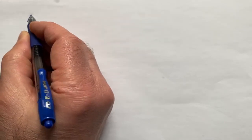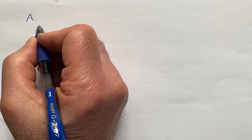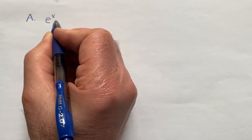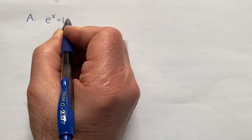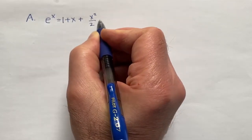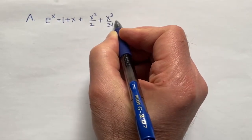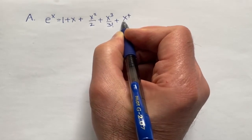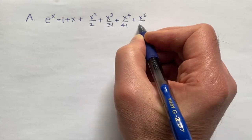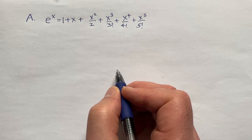Let's start with Chapter A. Here you're going to want to know your Taylor series expansions. We have, for example, e to the x: 1 plus x plus x squared over 2 plus x cubed over 3 factorial plus x to the 4th over 4 factorial plus x to the 5th over 5 factorial. I'm writing out several of these because I want to show you something with the expansion for sines and cosines.